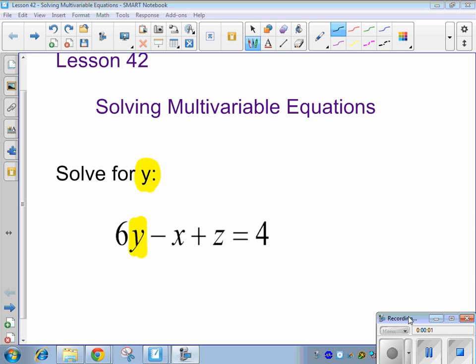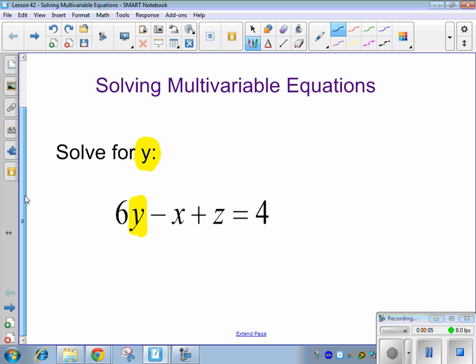We are solving multivariable equations. So this first one, we are solving for y, and our equation is 6y minus x plus z equals 4. Basically, multivariable, obviously, I have three variables in this one, but I'm only solving for one of them.